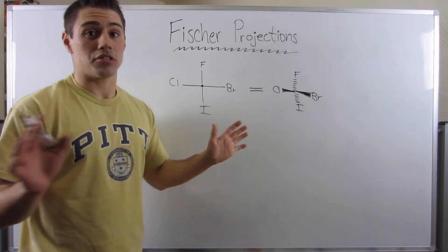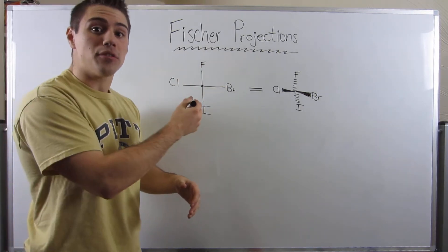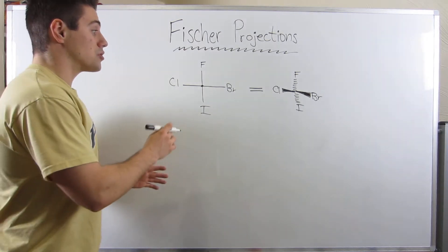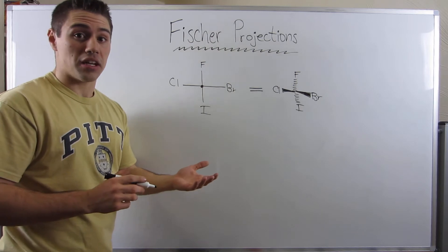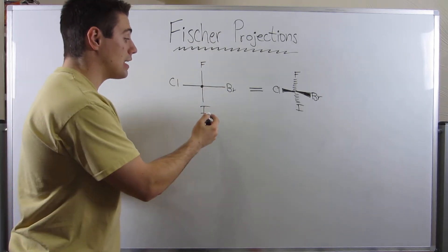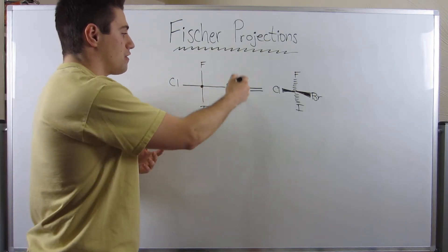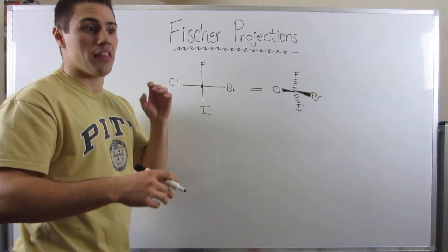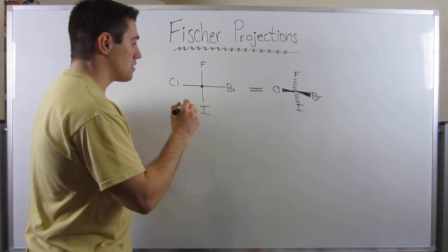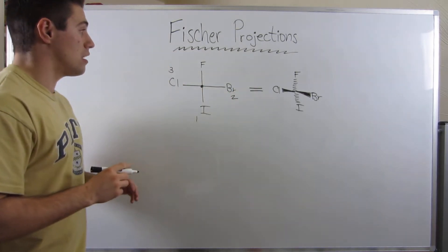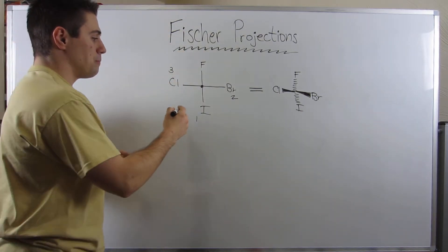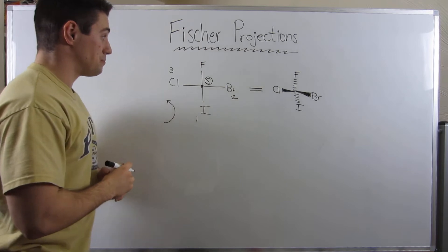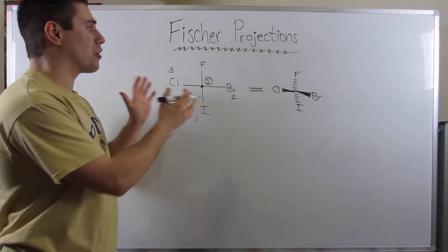Everything we've talked about still applies. You always want your lowest priority group to be facing away from you, and you assign based on priority based on molecular weight. If we were going to assign R/S to this carbon — he is in fact a stereocenter, attached to a chlorine, a fluorine, a bromine, and iodide. Fluorine is the lowest priority. Luckily, he's facing away from us, so we can just assign and directly apply R or S. Iodine is the heaviest, bromine is second, chlorine is third, fluorine is facing away through the board. We're going to the left, so that means this carbon would be S.